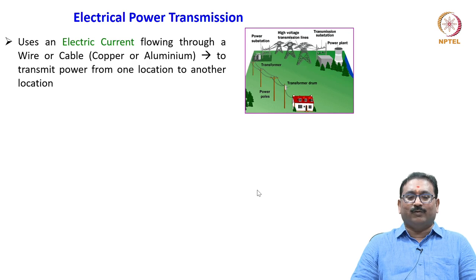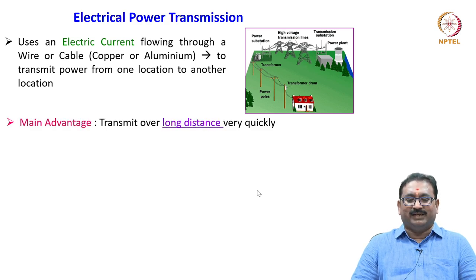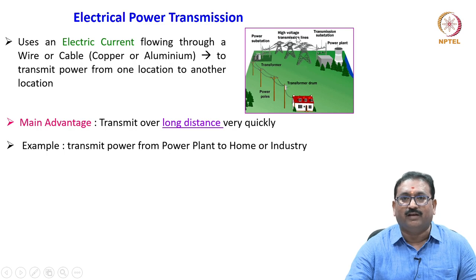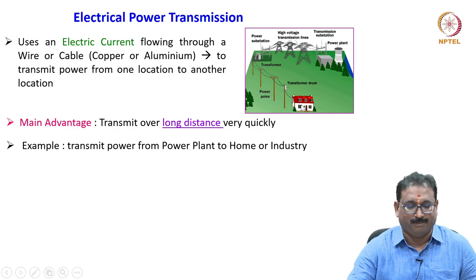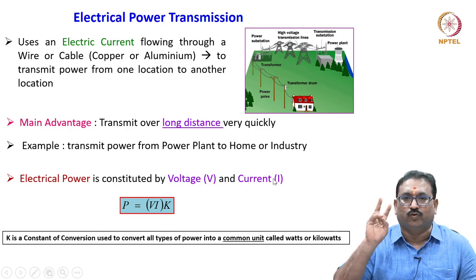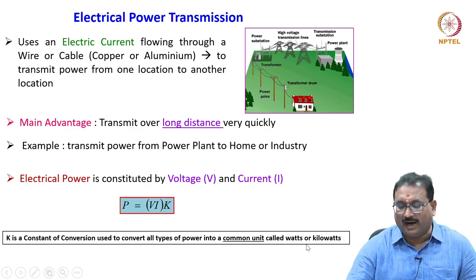In electrical power transmission, we use electric current flowing through a wire or cable to transmit power from one location to another. The main advantage is transmission over long distances very quickly — for example, transmitting power from the power plant to houses and industry. Electric power is constituted by voltage and current, the two variables. P is a function of V and I, where K is used to convert all the powers into one unit like watts or kilowatt.